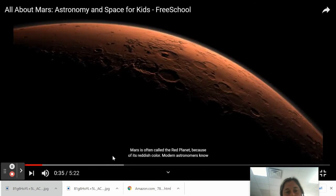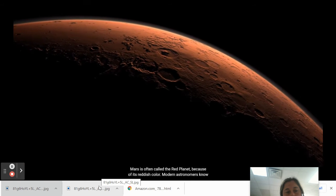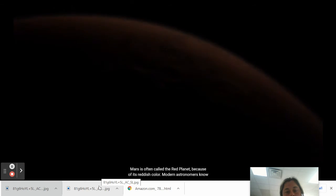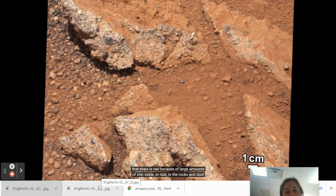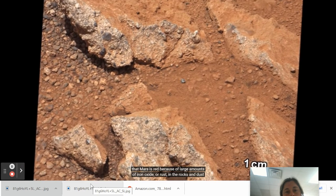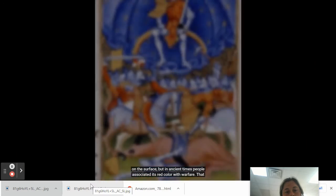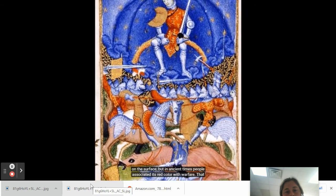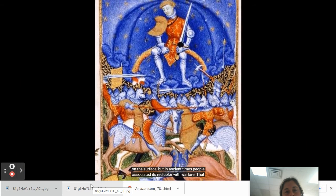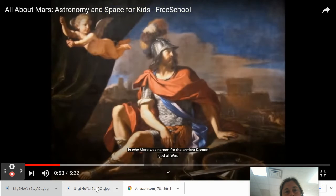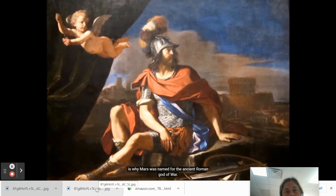Mars is often called the red planet because of its reddish color. Modern astronomers know that Mars is red because of large amounts of iron oxide or rust in the rocks and dust on the surface. But in ancient times, people associated its red color with warfare. That is why Mars was named for the ancient Roman god of war.